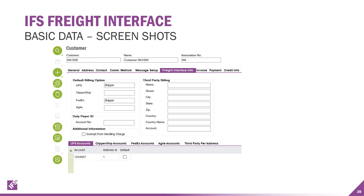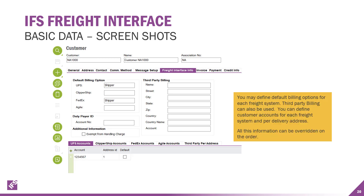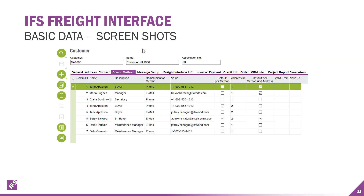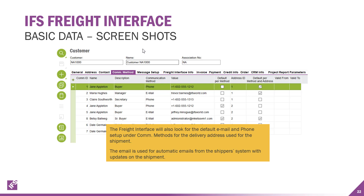You set up freight interface information on that customer record and can define the default billing options for each freight system you're using. There's residential address information that gets passed over to the freight interface solutions. Your basic data on your customer will utilize the default method and address, so when it pulls information over into UPS WorldShip asking for the email or phone number to use, it'll pull in your default one — make sure those are set up properly.